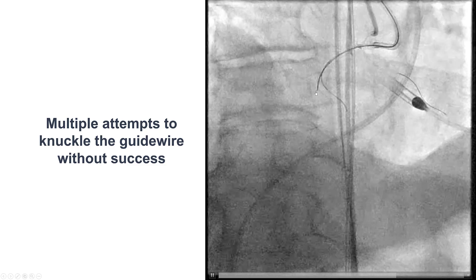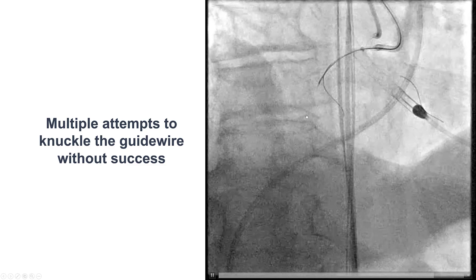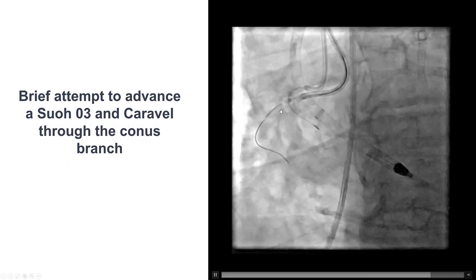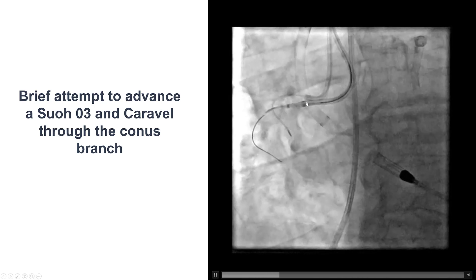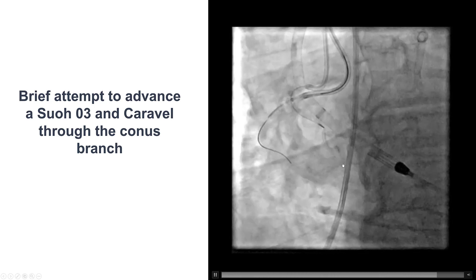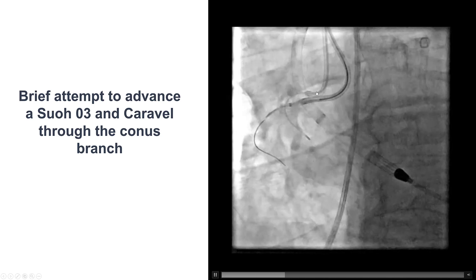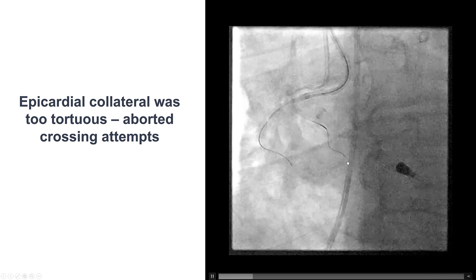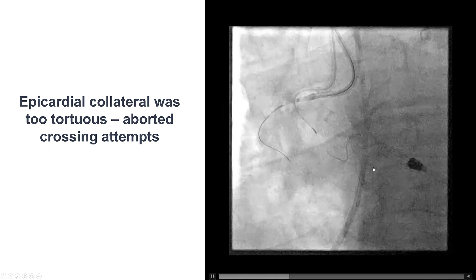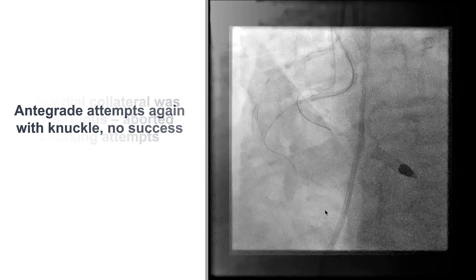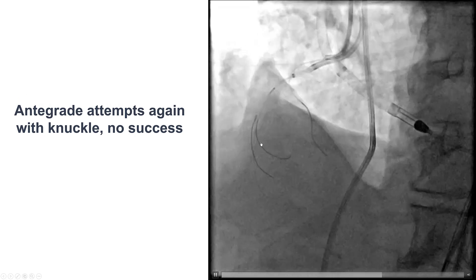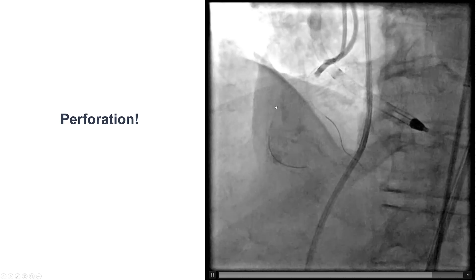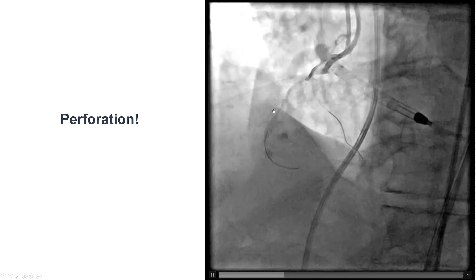Retrospectively, when we observed it, the knuckle size was relatively large, which should have raised a red flag. We tried again to advance a Caravel microcatheter through the conus branch for potential retrograde crossing, but it was too tortuous and we were unable to cross this epicardial collateral into the distal true lumen. Antegrade attempts were unsuccessful, and then with contrast injection, we now had a problem — a perforation in the mid-right coronary artery.